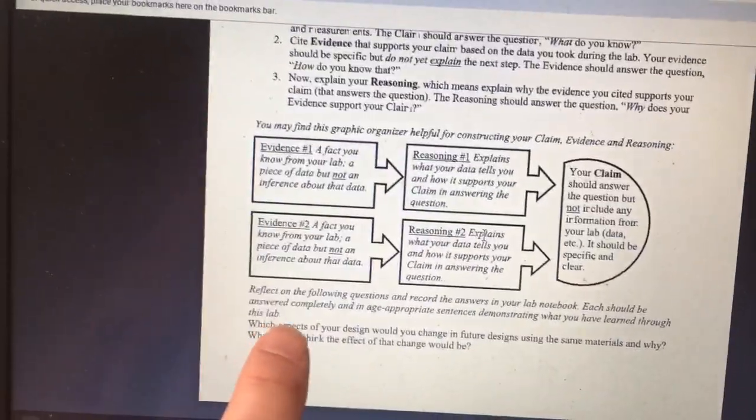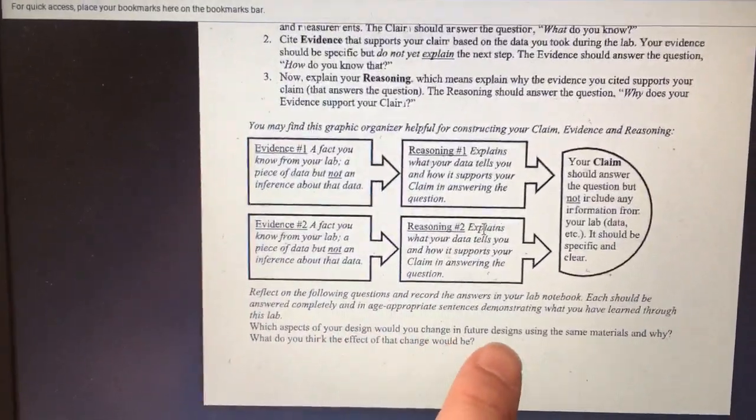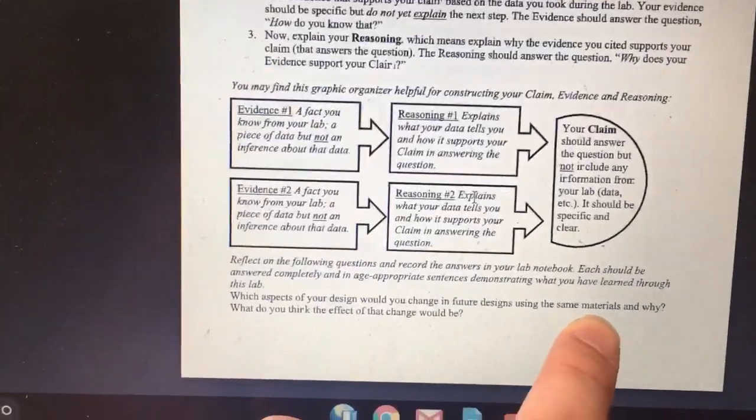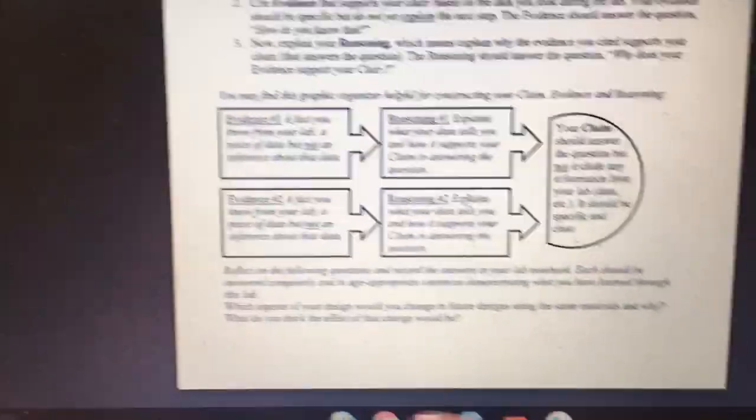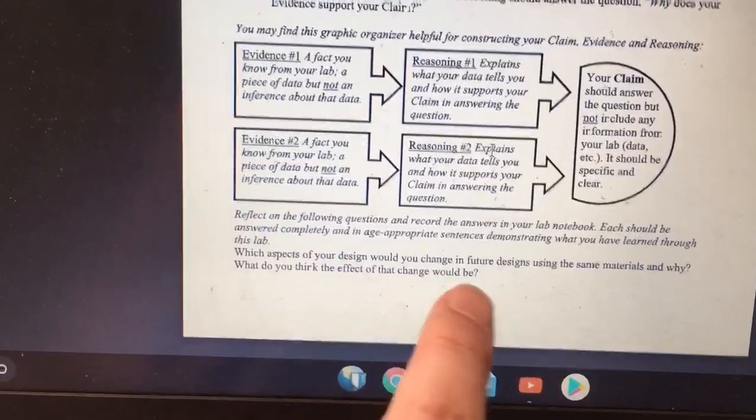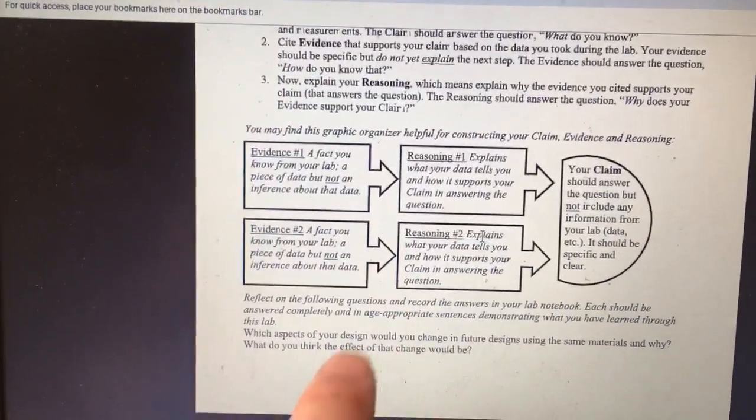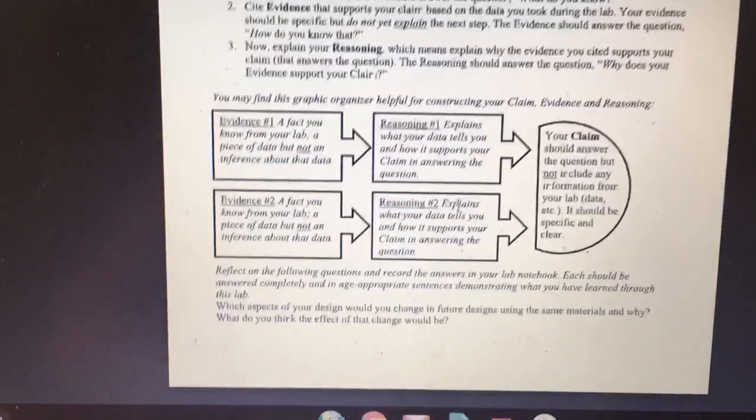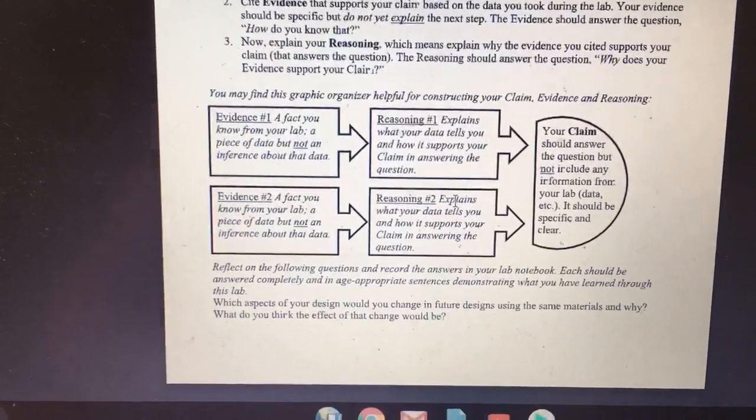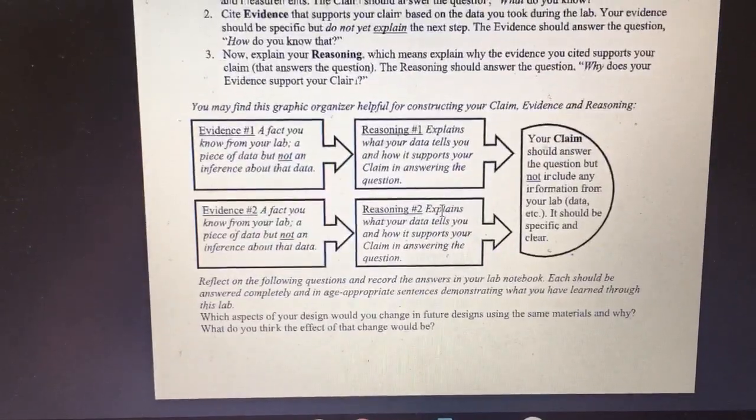There are two more questions to answer. Which aspects of your design would you change using the same materials, and why? And then, what do you think the effect of that change would be? So basically, what would you change, why would you change it, and how do you think that would affect things? So that's it. That's what you've got to do. Let me know if you have any questions.